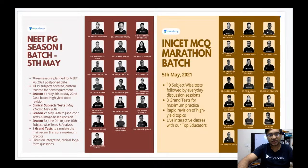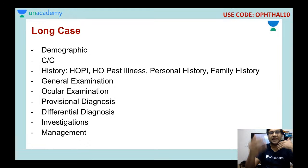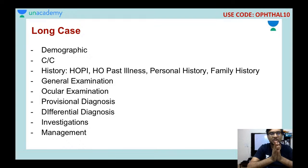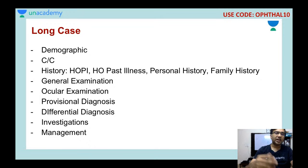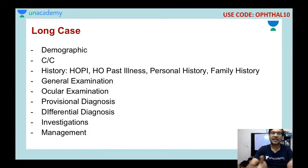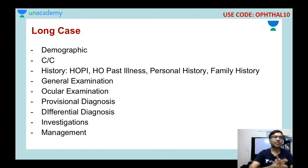Whenever you have a case, you have to proceed with the following headings: demographic profile of the patient — age, sex, address — then chief complaints, then history including history of present illness, past illness, personal history, and family history if relevant. After that, general examination, ocular examination, provisional diagnosis, differential diagnosis, investigations, and finally management. This should be your protocol whenever you are managing a case of endophthalmitis.